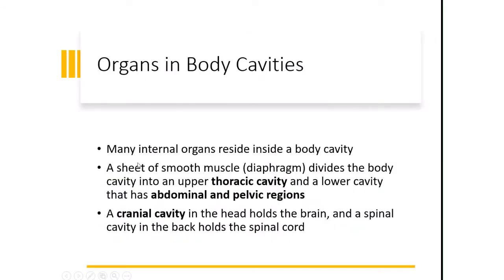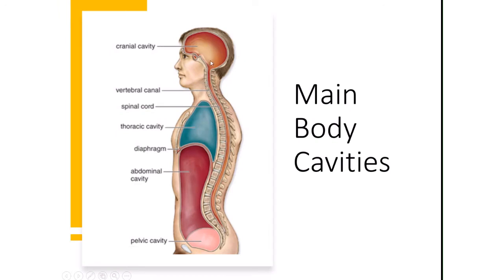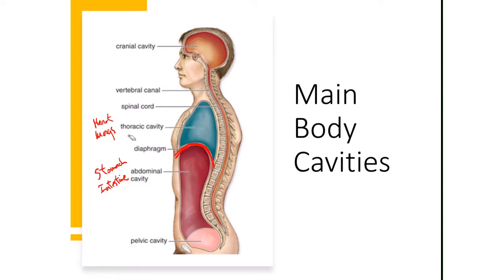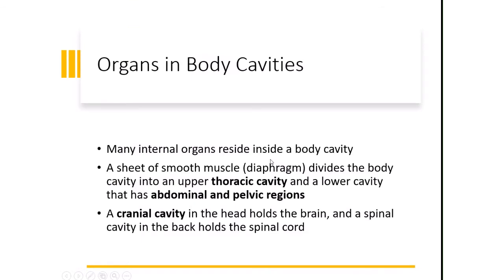Many internal organs are found inside body cavities. The cranial cavity is where your brain is; the vertebral canal is where your spinal cord will be. In the chest is the thoracic cavity, where you'll find your heart and lungs. Below that is the abdominal cavity, where you'll find the stomach, intestine, and kidneys. The thoracic and abdominal cavities are separated by the diaphragm, a muscular sheet that also helps you breathe.